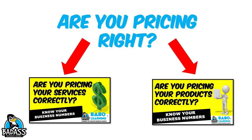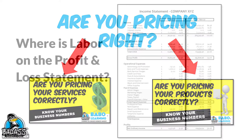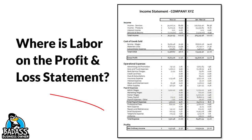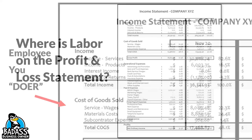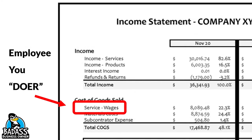By the way, if you watch any of my pricing videos, I go into more depth on this and I will put a link in the show notes below. Now, let's take a look at a profit and loss statement and I'll show you how all three of these will look when you're looking at your P&L. Here is a landscaper's profit and loss statement. You might recall the very first thing we discussed was employee you versus business owner you. The employee you will be right here in the labor hours under the cost of goods. Since most of you are the only doer in your business, you are still going to be captured right here for those labor hours.